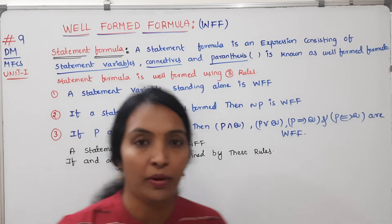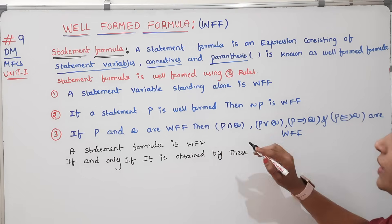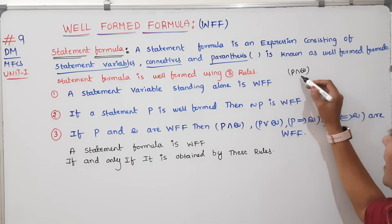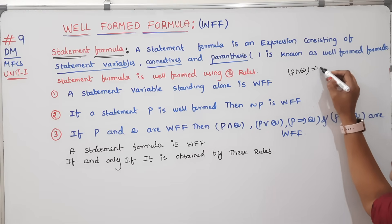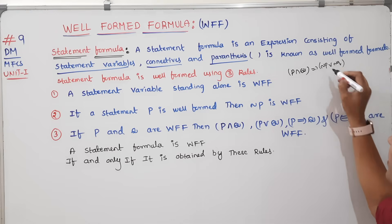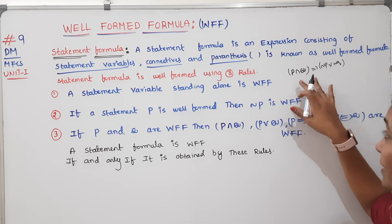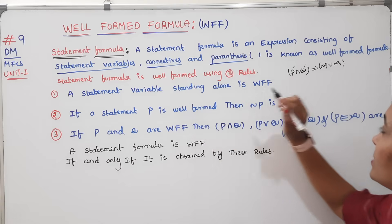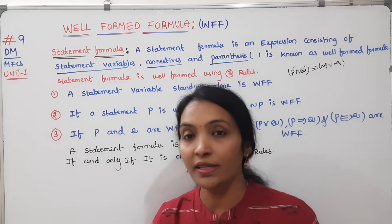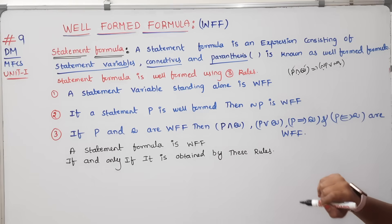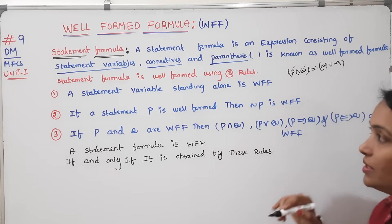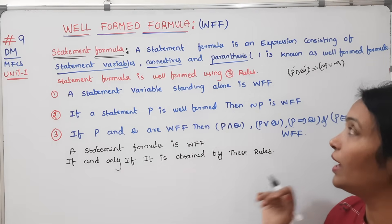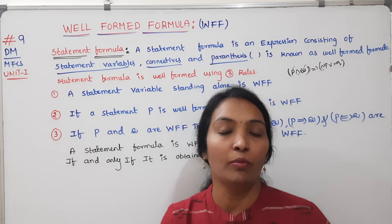It is known as a well-formed formula. For example, consider a statement: it implies negation P or negation Q. This statement contains statement variables P, Q, and R, connectives such as 'and', 'or', 'implies', 'bi-implies', and negation, along with parentheses.